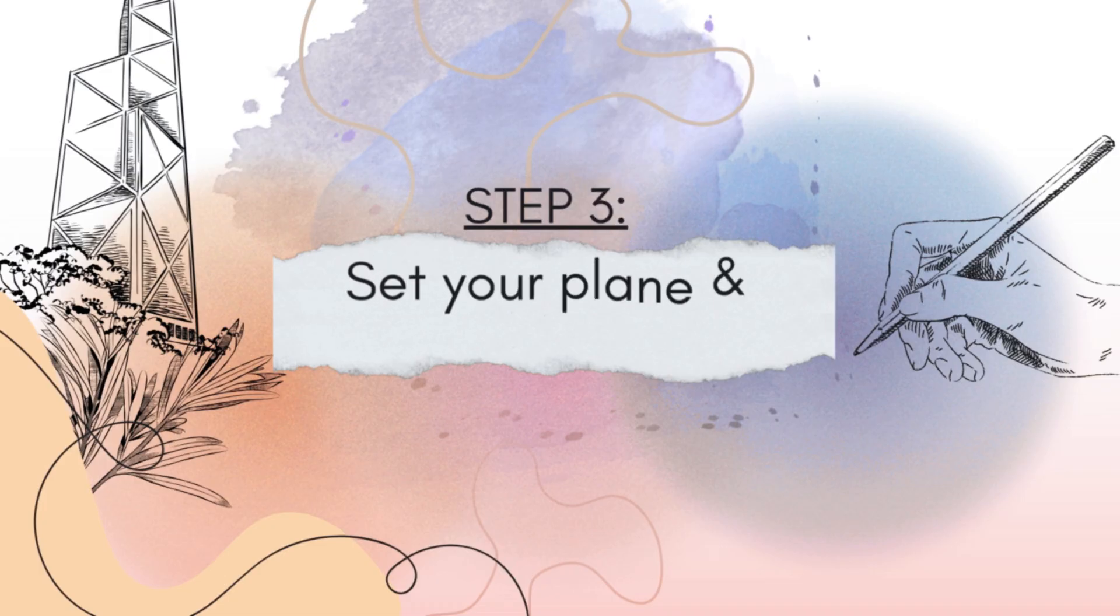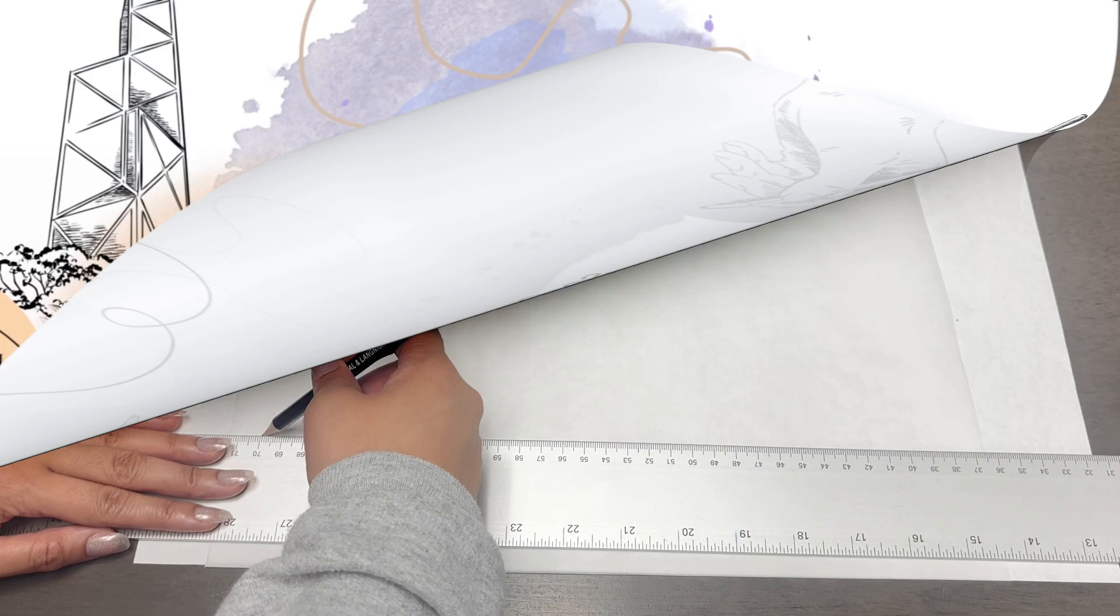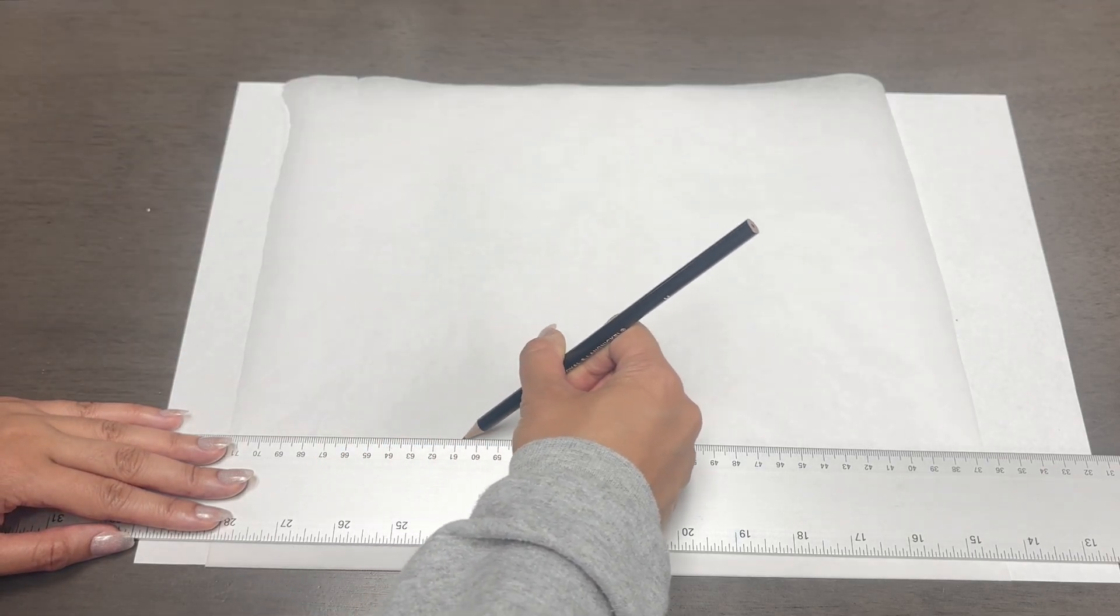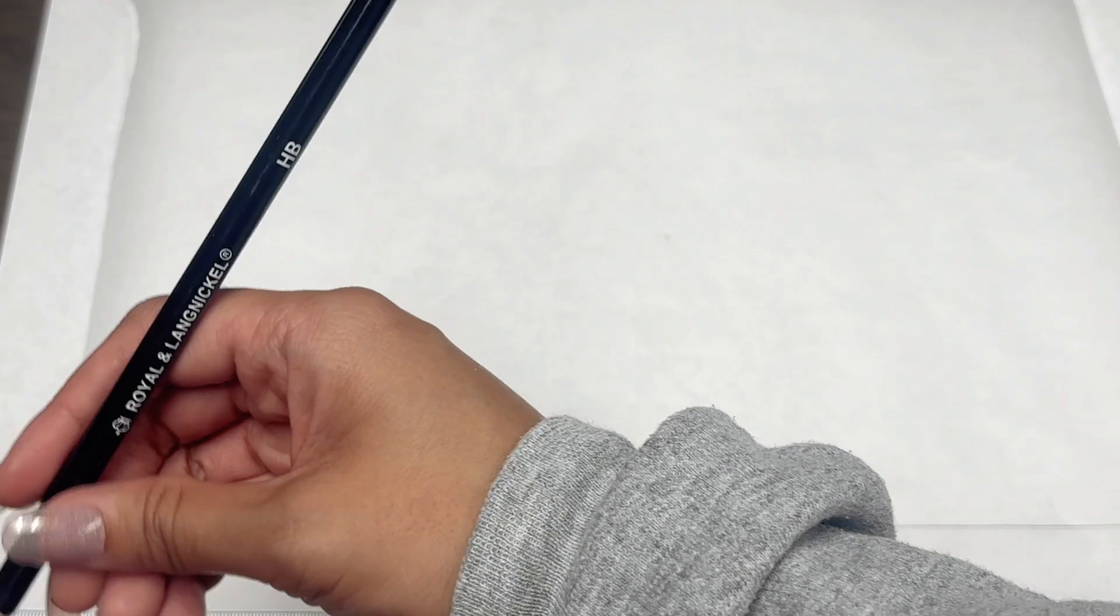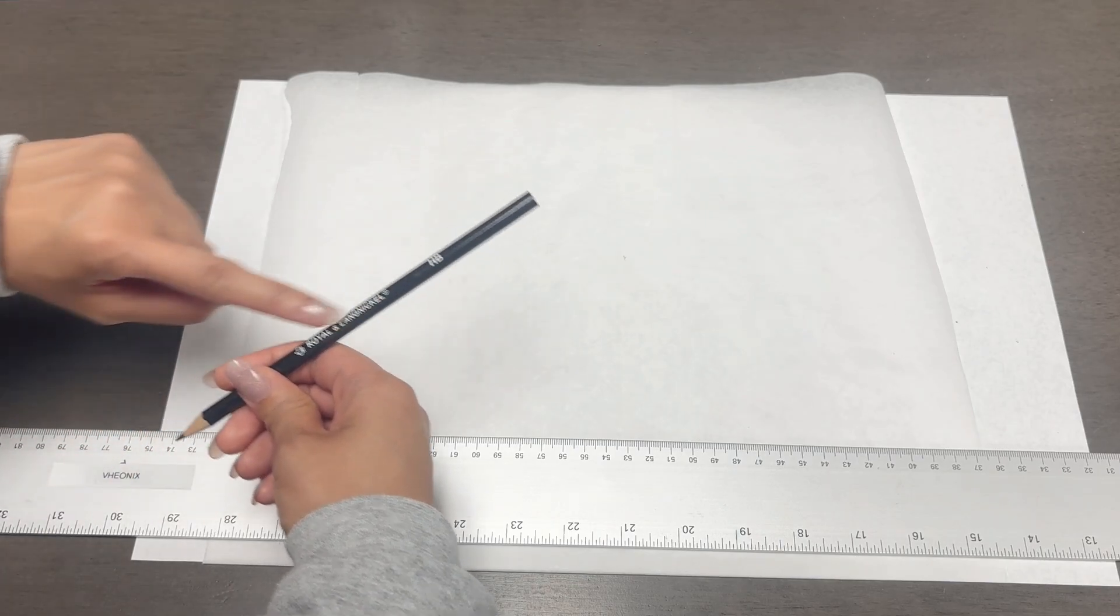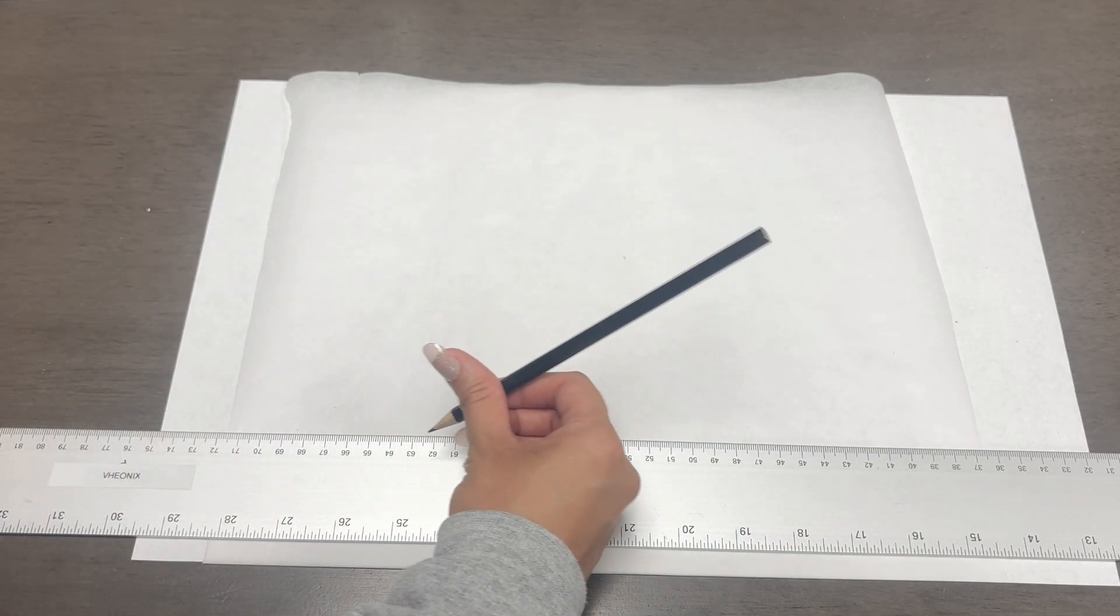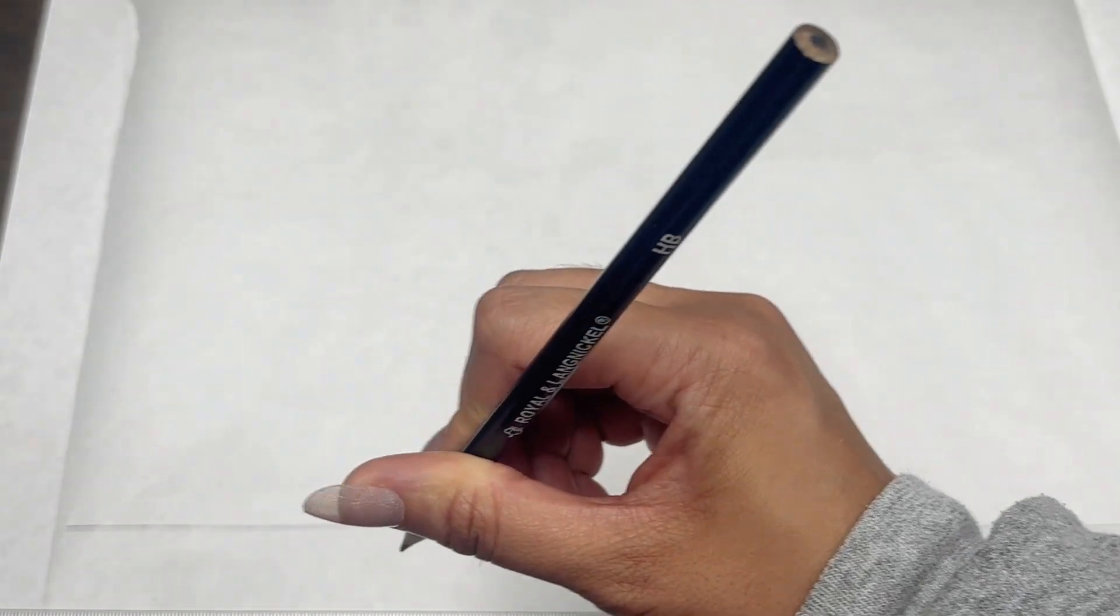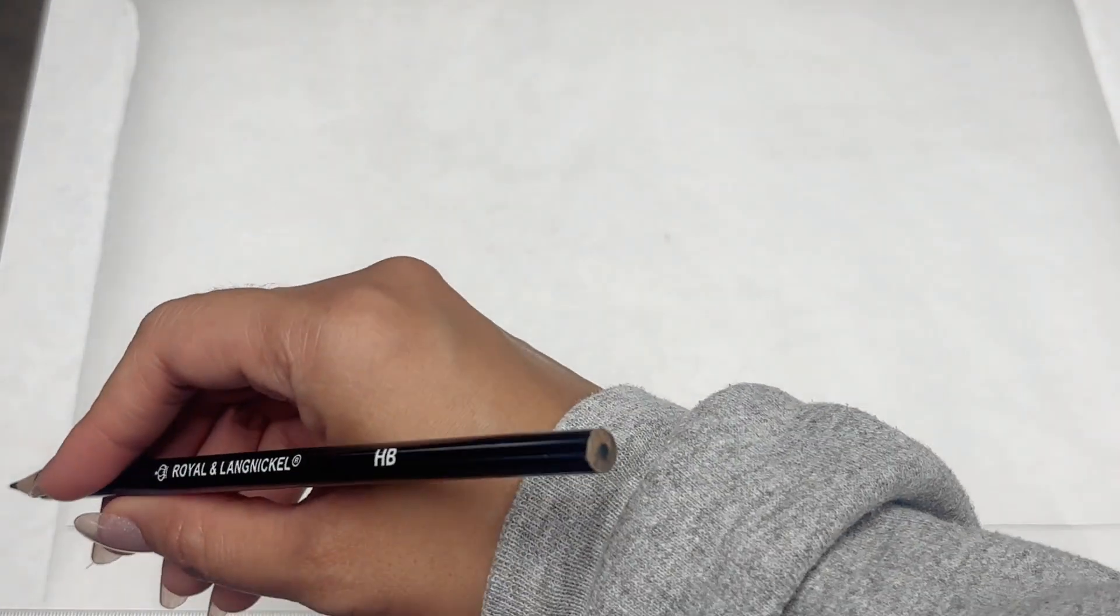Step three: Set your plane and axon type. First, set your plane. A good tip is that if you want a good way to have a consistent line weight, rotate your pencil as you're drawing your line. So as you can see here, there's text on the pencil and you'll see the pencil rotating along the way. It's really just something you have to get used to. So let's start again until the line is of your liking.